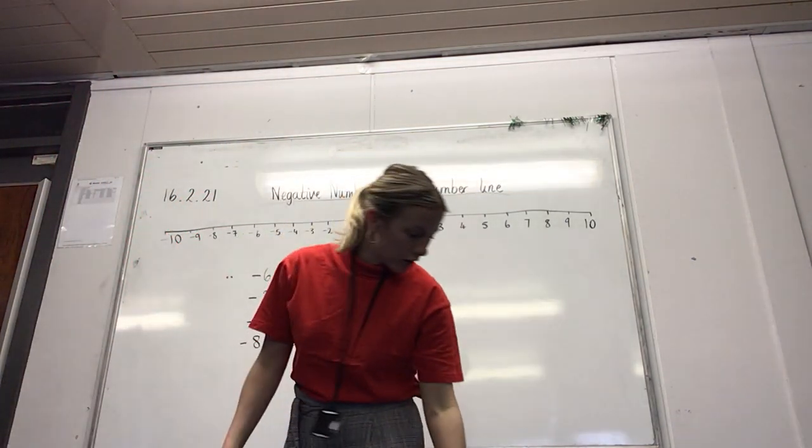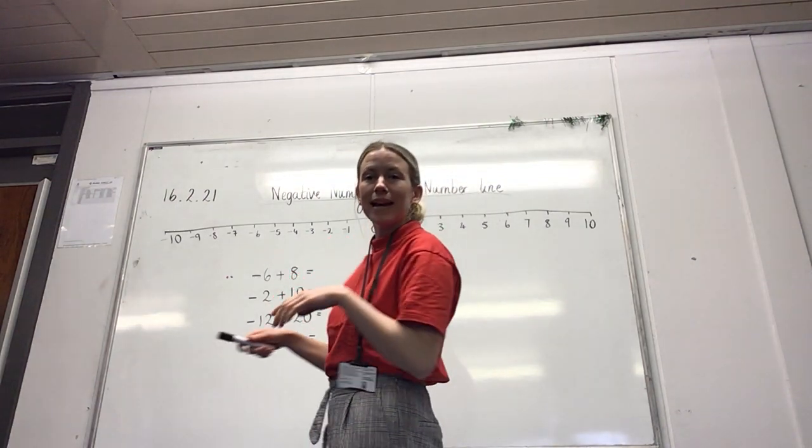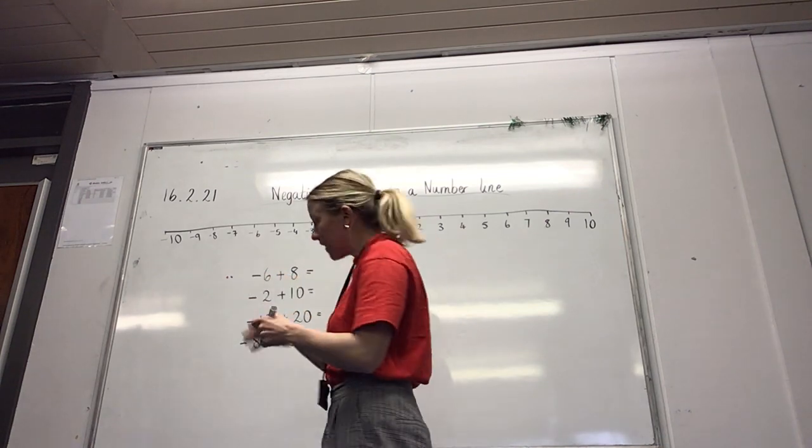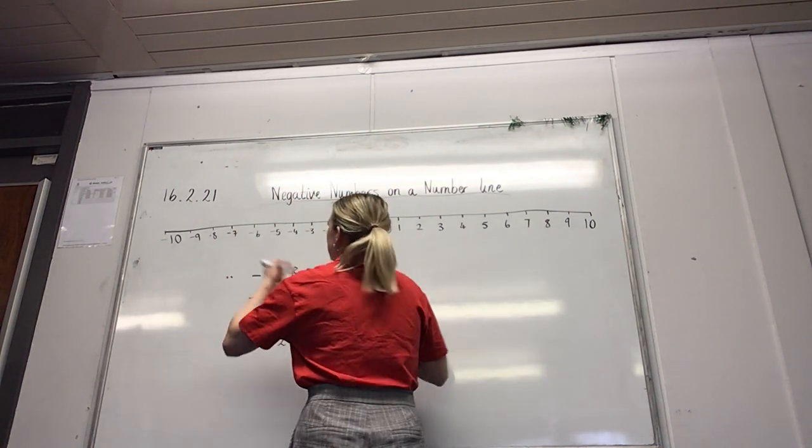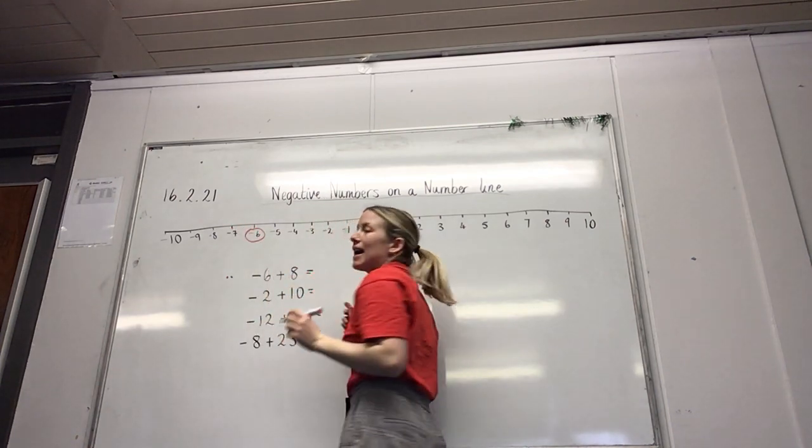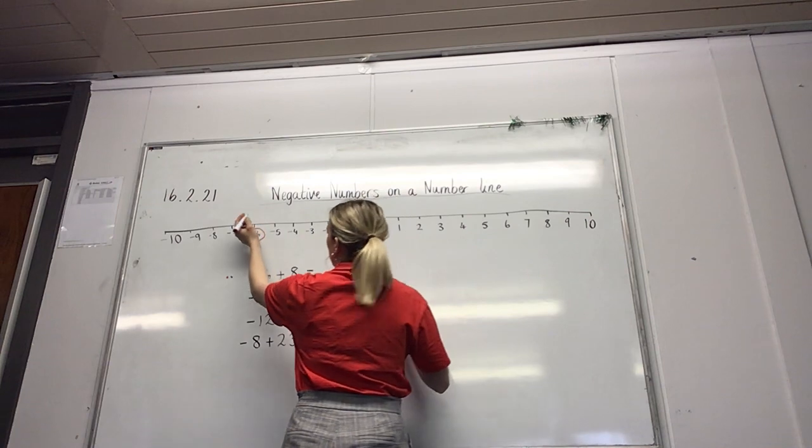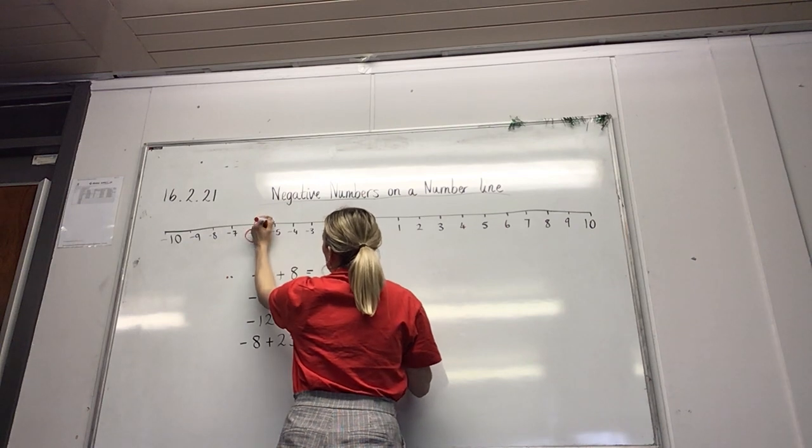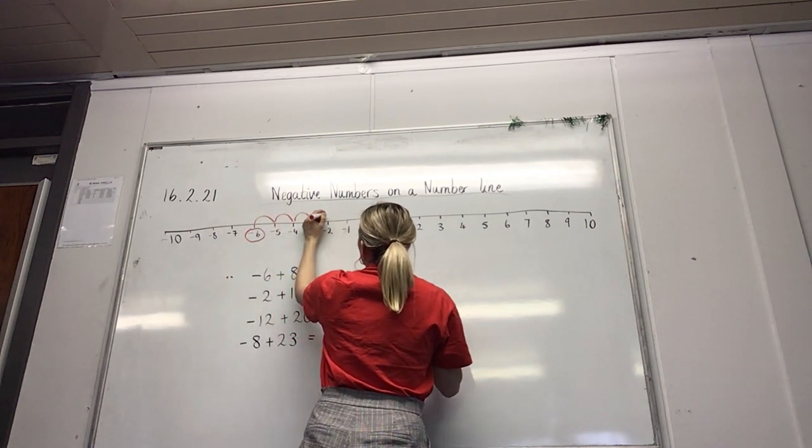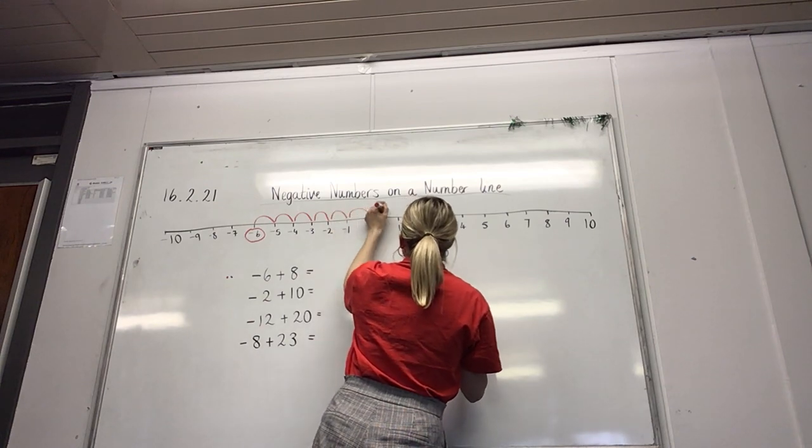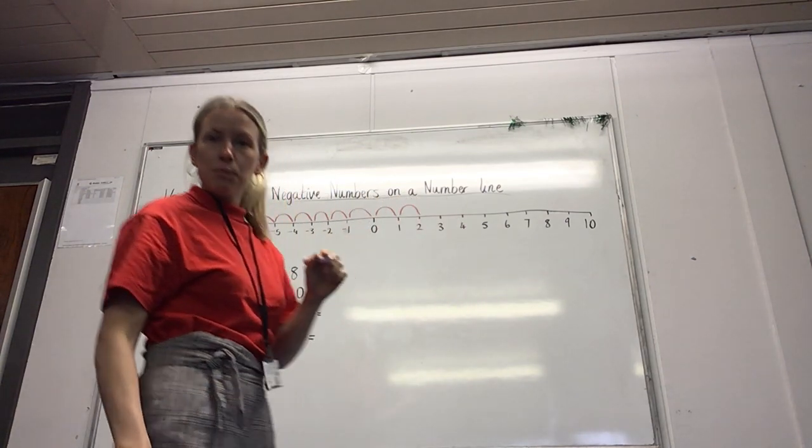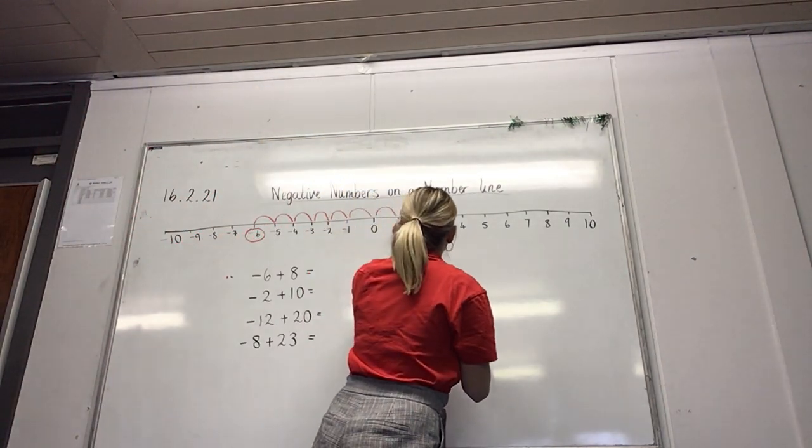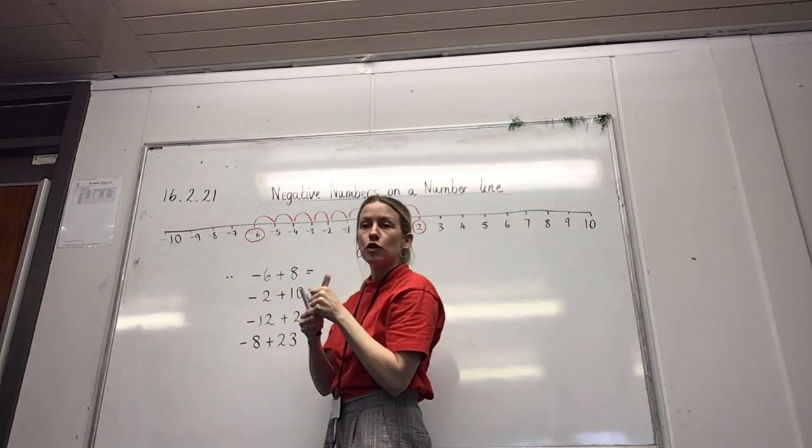So the first one on the mild column is minus 6 add 8. So what I would do, if I've got the number line in front of me, is I'm going to circle minus 6 and I'm going to be adding on 8. So very easy, you can either do it individual loops and count forwards. So for example, 1, 2, 3, 4, 5, 6, 7, 8. Minus 6 plus 8 takes me to 2. My answer is 2 and I can circle that and add it in to my answer grid.